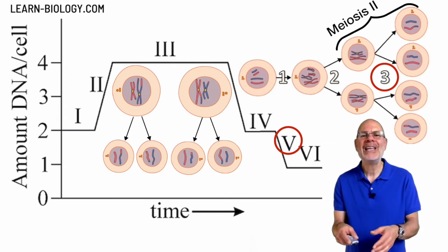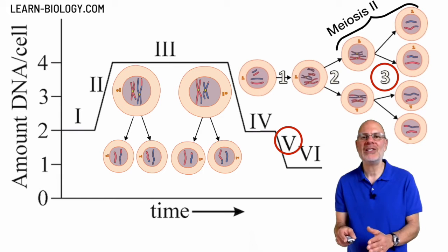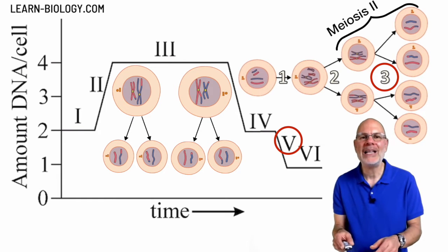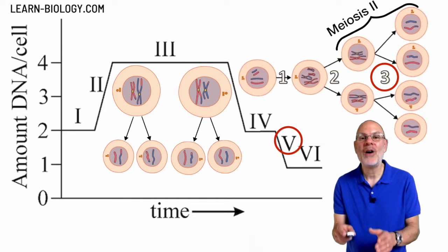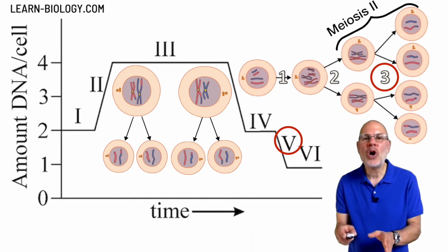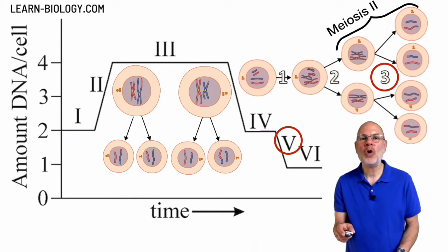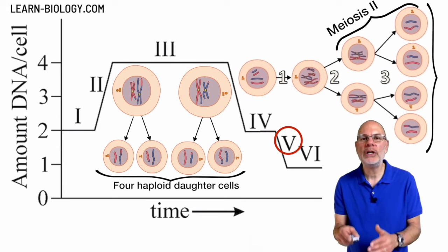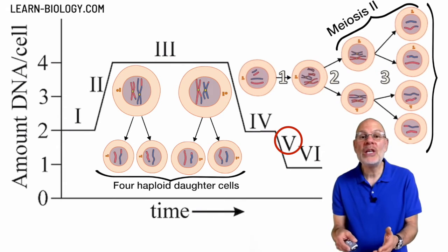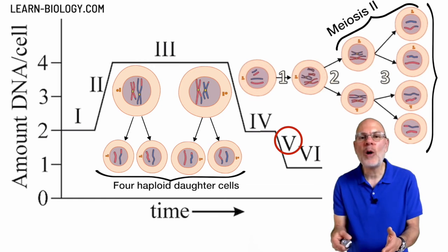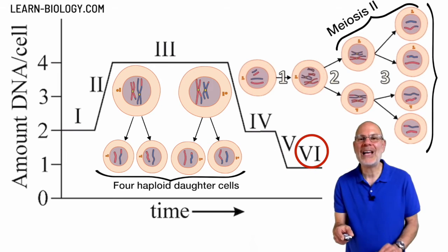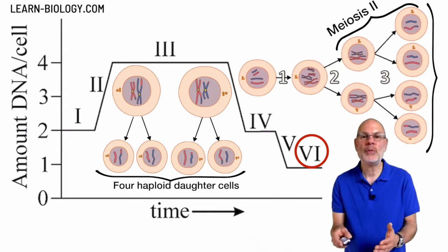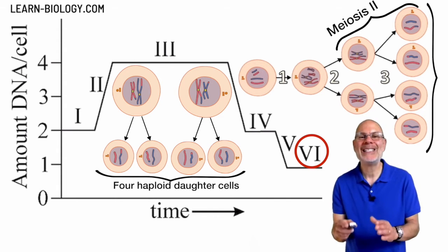Next, each daughter cell divides — that's step three on the right and Roman numeral V on the left. As the daughter cell divides, the sister chromatids separate. The result is four haploid daughter cells, shown on the far right of the diagram. The amount of DNA in these cells is now half that of the germ cell that started the process, shown at Roman numeral VI.